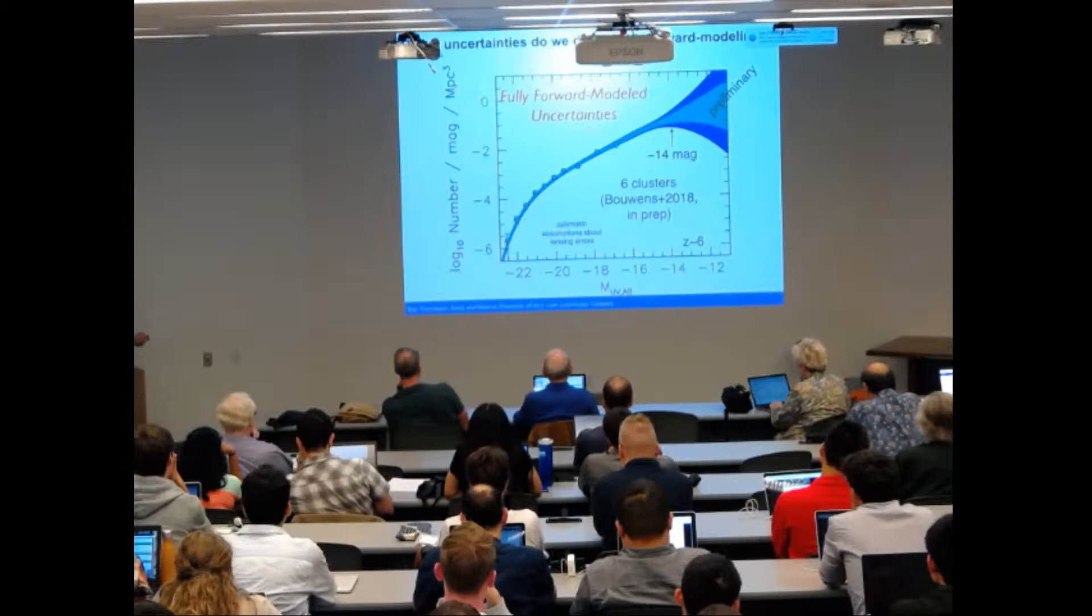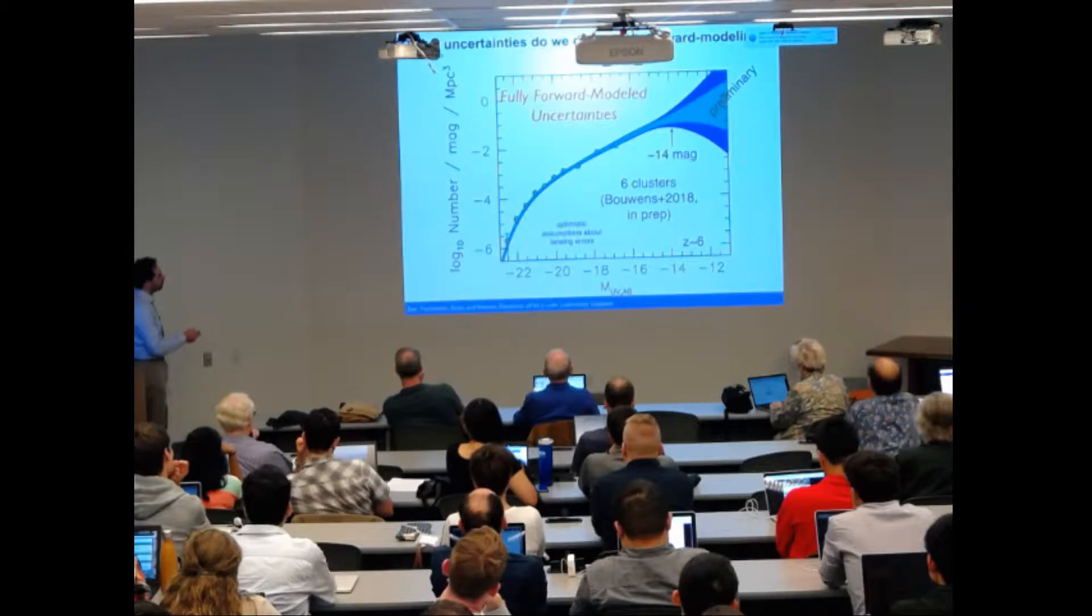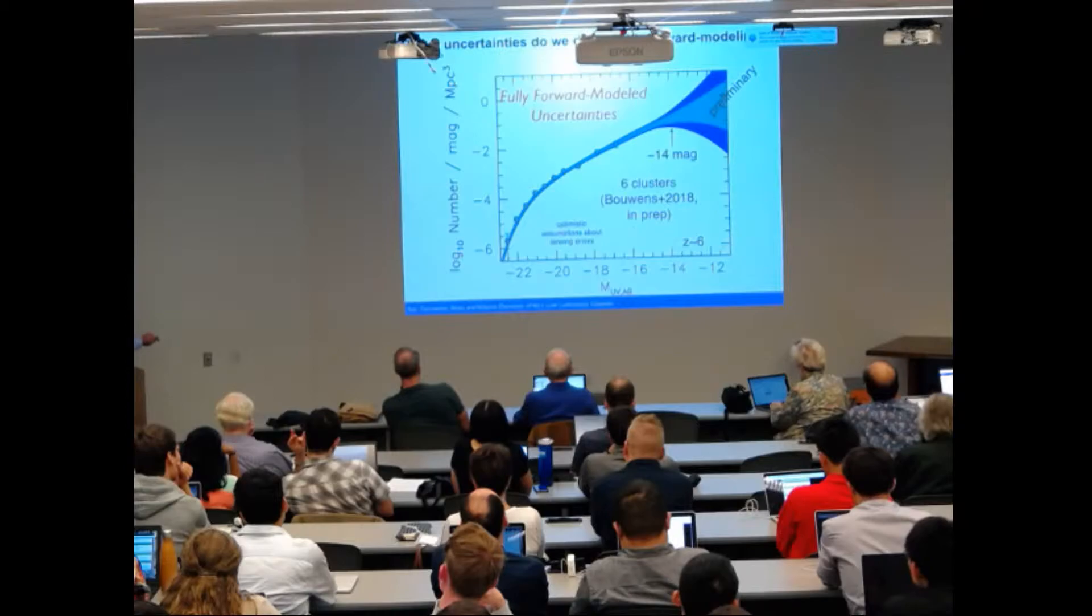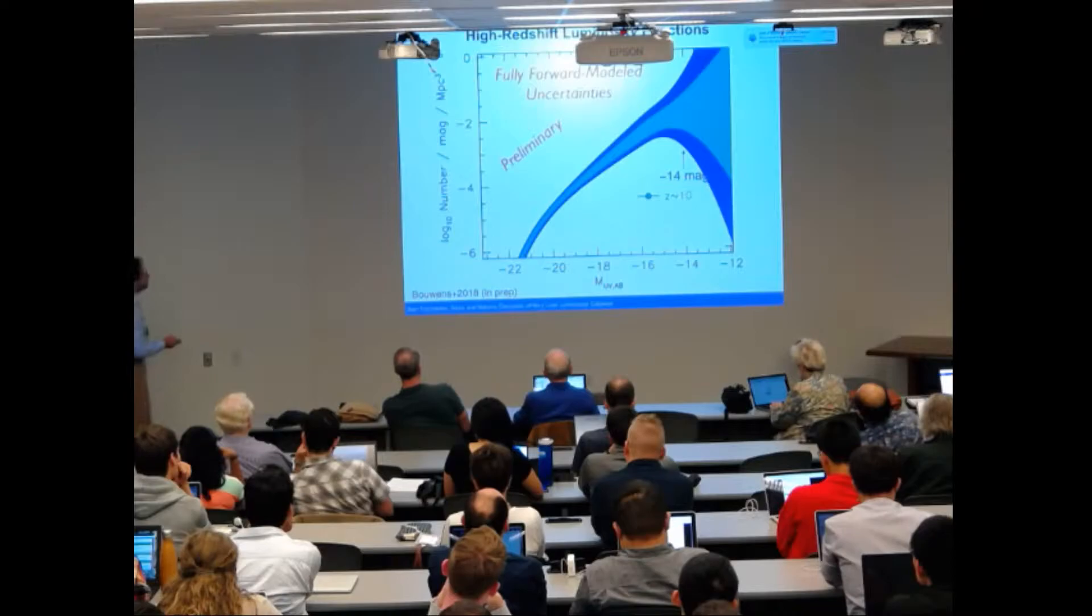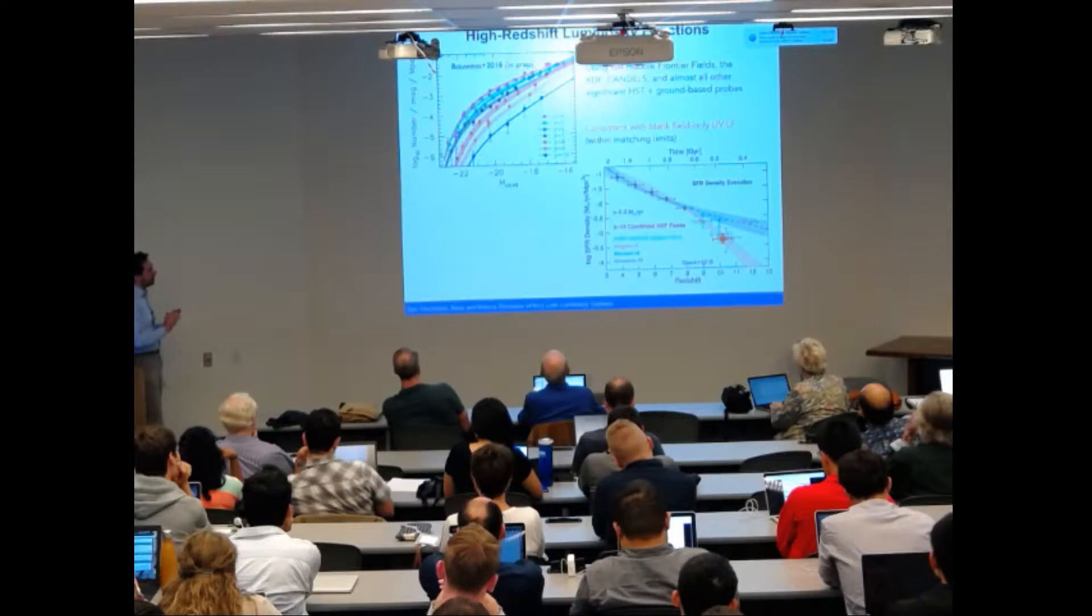He implemented his forward modeled luminosity function estimates, and this is a preliminary result. He's measuring luminosity function from redshift about two to about ten, and we can see that the luminosity function doesn't show any turnover down to about absolute UV magnitude of about minus fourteen to minus fifteen as we go to higher redshift nine and redshift ten.